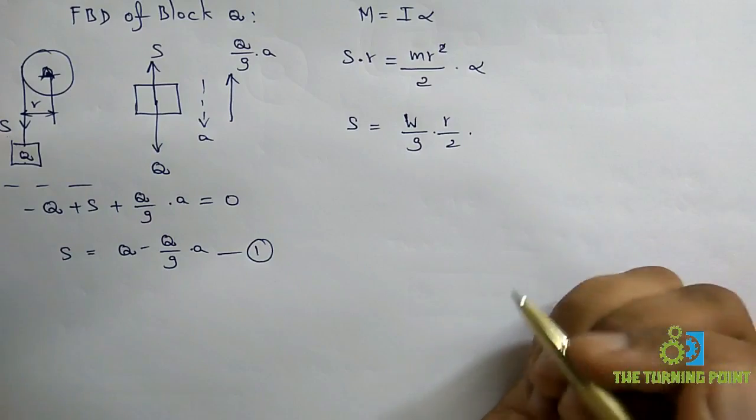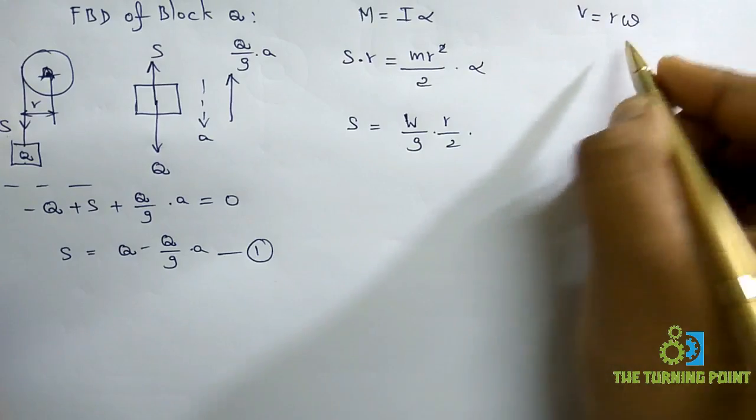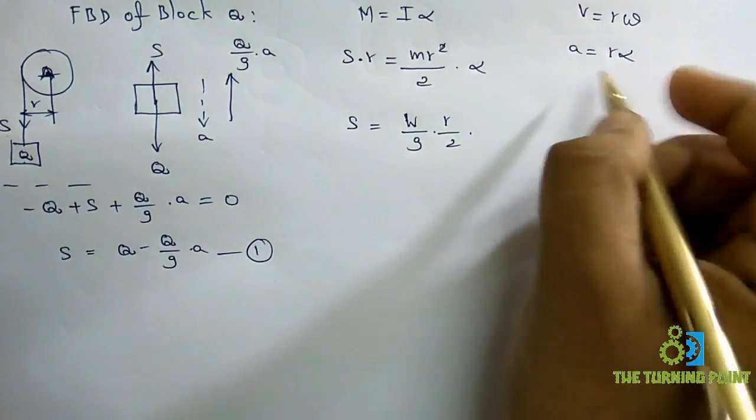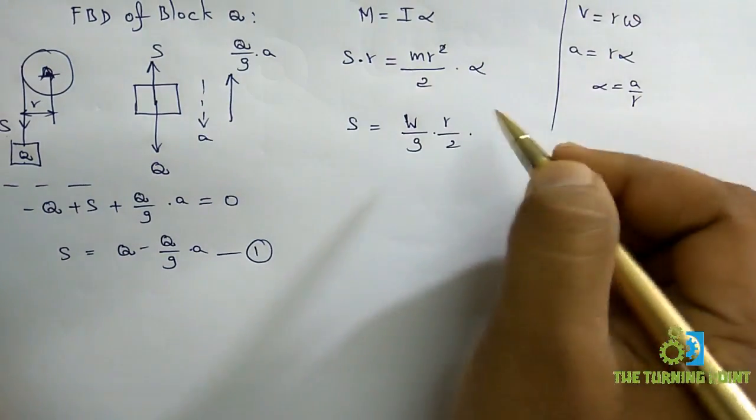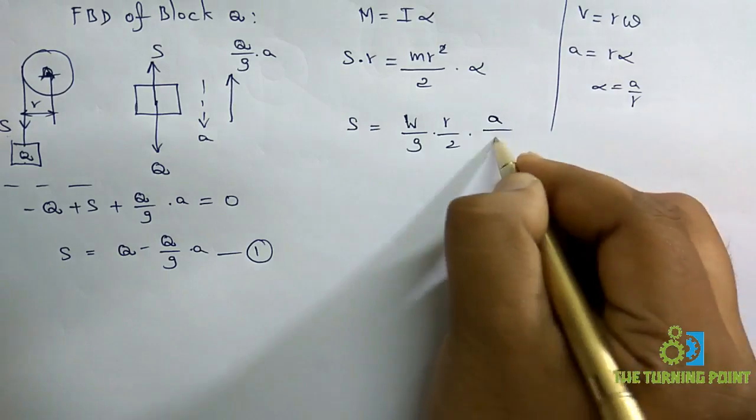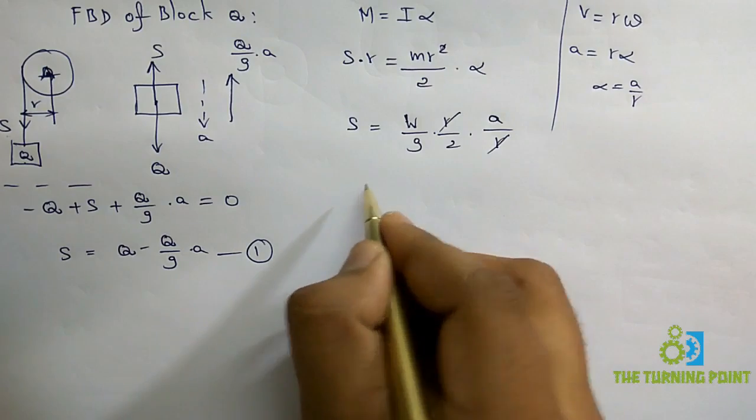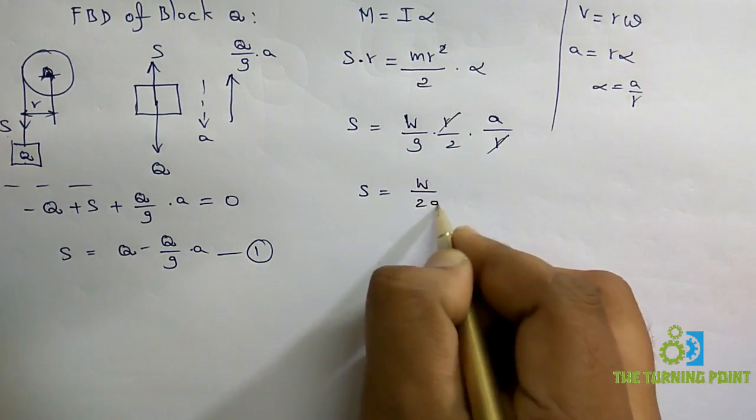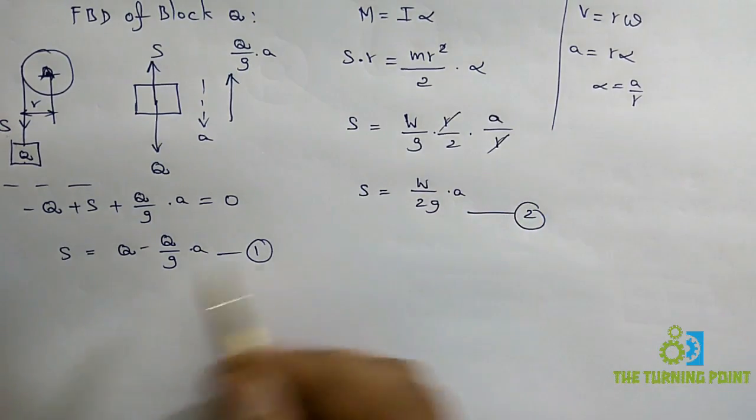You know the relation between linear velocity and angular velocity: V=Rω. If I differentiate this one, A=Rα. So instead of α I can substitute A/R. Just using that relation here, A/R, so here R also gets cancelled. From that, S equals W/2G into A. Consider this as equation 2.